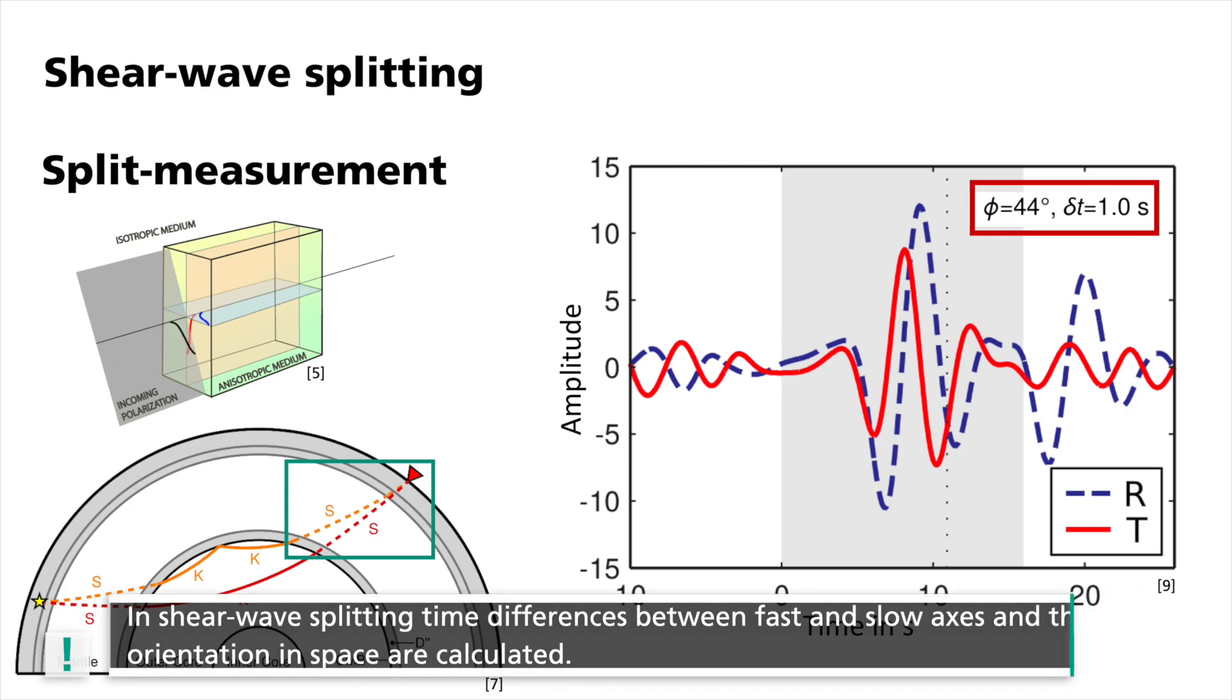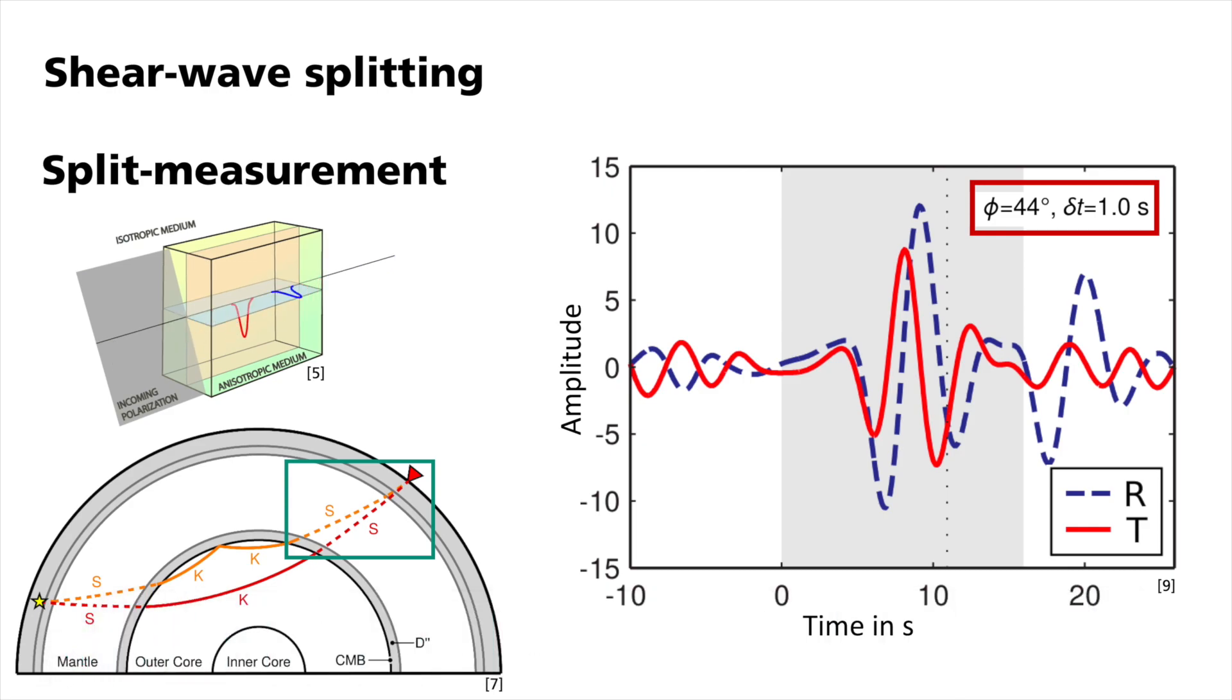To find those parameters, we rotate the seismograms on the radial and transverse component and shift them in time systematically using a grid search to minimize the energy on the transverse component. In this case, this happens for a fast axis angle of phi equal to 44 degrees relative to north and a delay time of one second between the two split waves. If possible, we measure the splitting for SKS and SKKS in each seismogram.